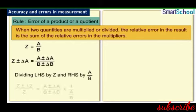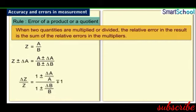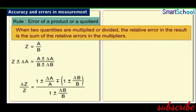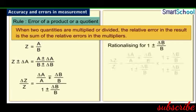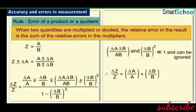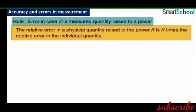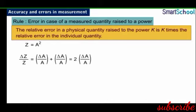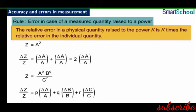This holds true for division as well. The relative error in a physical quantity raised to the power k is k times the relative error in the individual quantity. If Z = A², then ΔZ/Z = ΔA/A + ΔA/A = 2 × ΔA/A. Hence, the relative error in A² is twice the error in A. In general, if Z = A^p × B^q / C^r, then ΔZ/Z = p(ΔA/A) + q(ΔB/B) + r(ΔC/C).